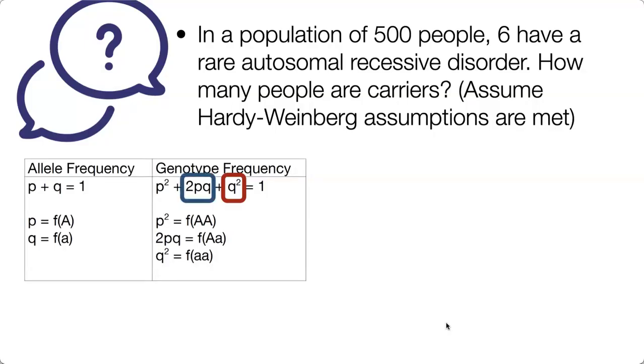To determine that, you will need to identify 2pq and then times it by the population size. So beside q squared, let's just indicate what they give us: 6 out of 500 is equal to q squared.